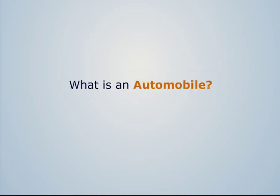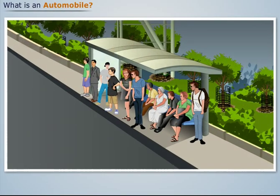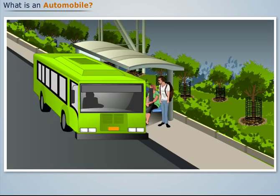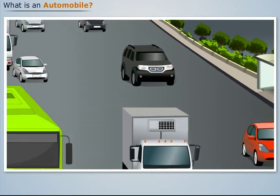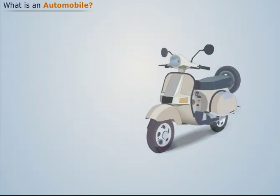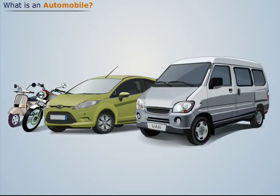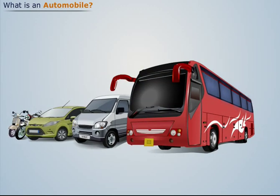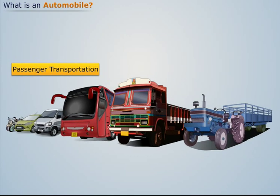What is an automobile? In today's fast-paced life, vehicular transportation has become an inevitable requirement for high-speed commuting. Scooter, motorcycle, car, van, bus, etc. are some common vehicles used for passenger transportation, while truck, tractor, etc. are some common vehicles used for goods transportation.